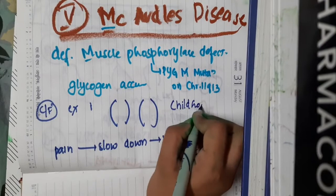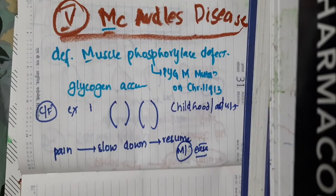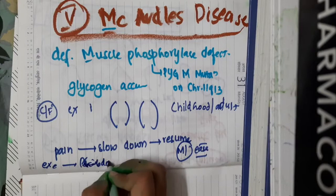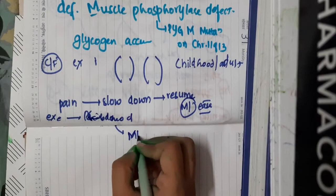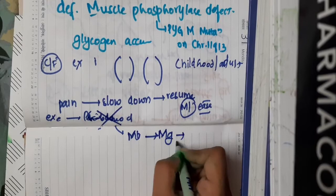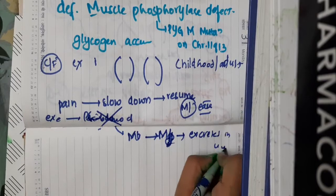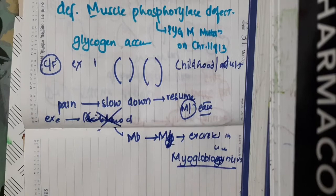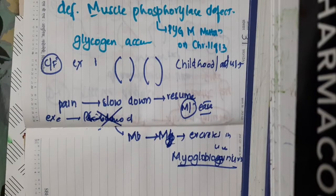This mainly presents in childhood and as an adult. In this condition there is muscle phosphorylase deficiency, so whenever there is exercise, rhabdomyolysis will occur. Through this rhabdomyolysis, myoglobin is broken down, and as a result, myoglobin is excreted in the urine causing myoglobinuria, which gives a burgundy color to the urine. This burgundy color urine due to myoglobinuria is one important feature to remember.